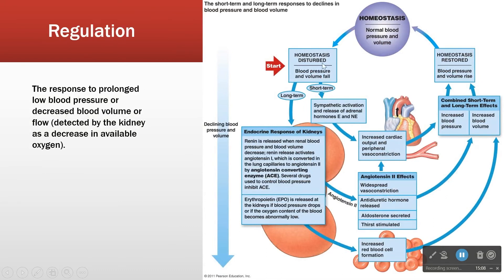Now we'll bring in the kidney. Homeostasis: blood pressure and blood volume fall — easiest example is hemorrhage. You get short-term and long-term effects simultaneously. Short-term: sympathetic activation, reduced baroreceptor output, increased cardiac output, and peripheral vasoconstriction. Long-term: when the kidney experiences low blood pressure over time, it releases renin, which leads to angiotensin-1, then angiotensin-2. Angiotensin-2 causes widespread vasoconstriction, release of aldosterone, release of antidiuretic hormone, and makes us thirsty. All of these work to increase blood pressure and blood volume.